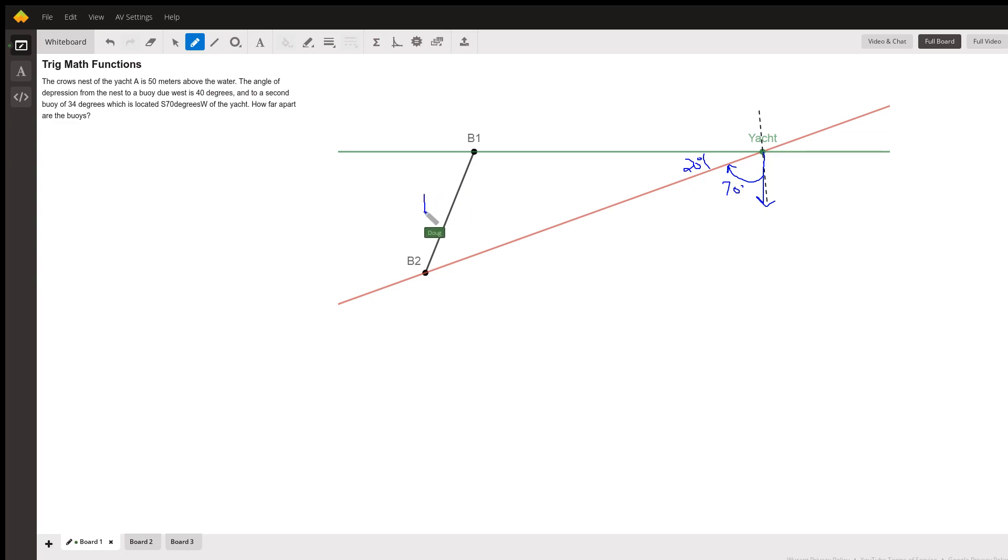And this is what we're trying to find. We'll call that big D. And let's call this distance right here D1, the distance to buoy one, and we'll call this distance right here the distance to buoy two.